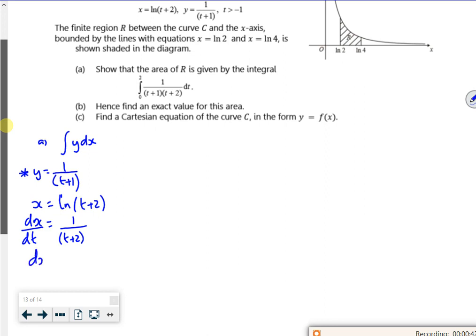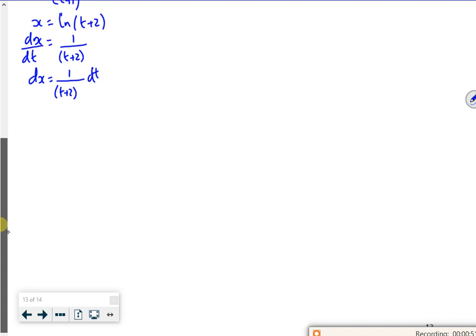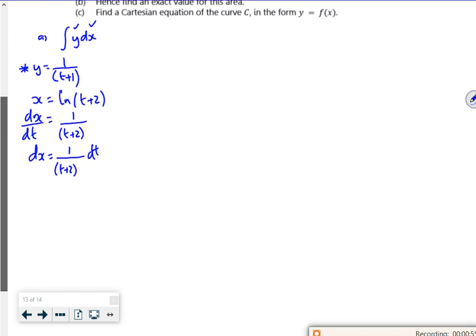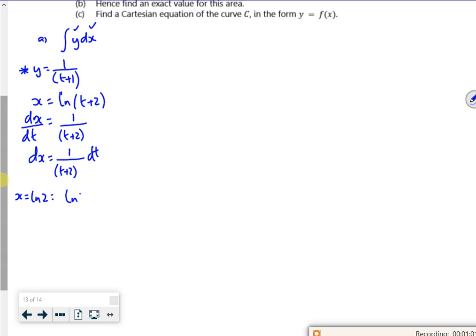Then I just need to rearrange it. So 1 over t plus 2, dt. I'm going to change my y, I'm going to change my dx. Just need to check out the limits, which might be a little bit more tricky to do, because it tells me x is log 2. So that would become log 2 is log of t plus 2. So the logs disappear. 2 is t plus 2, 0 for t.